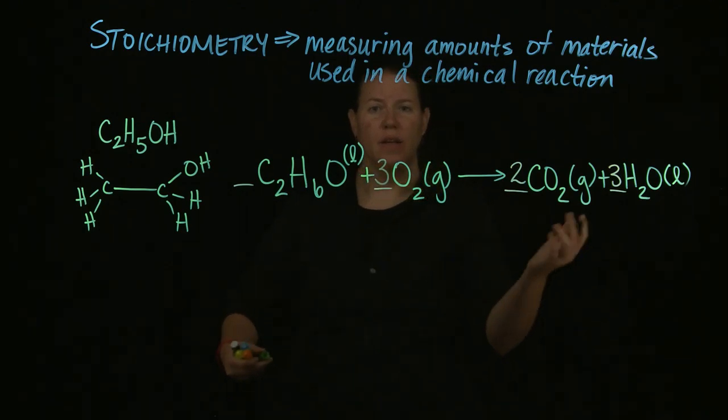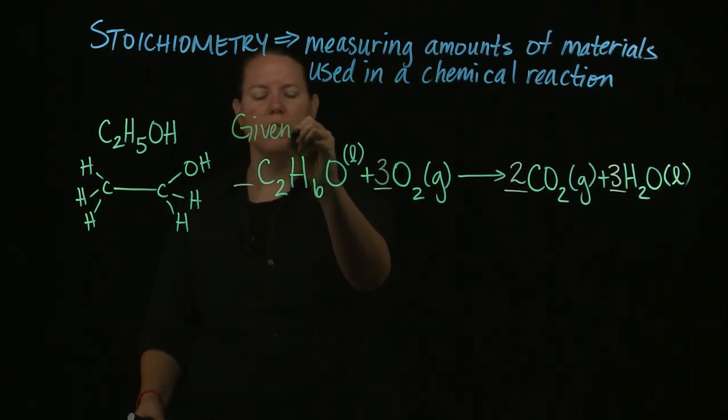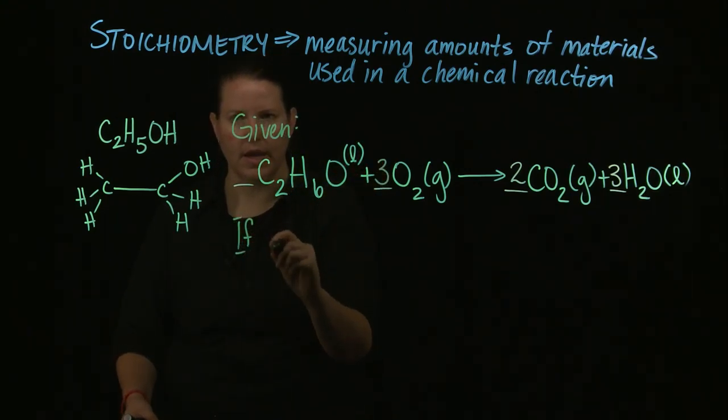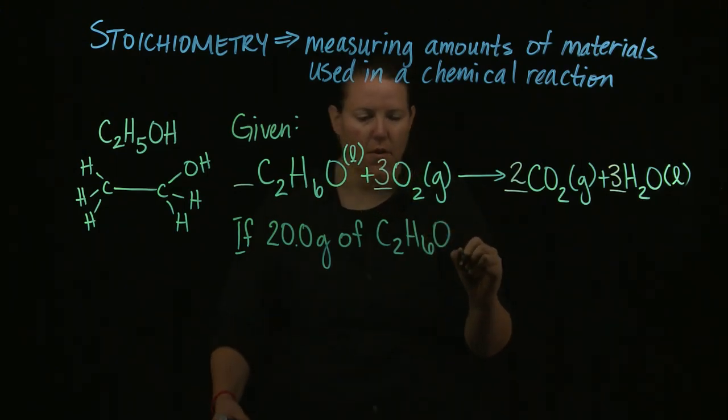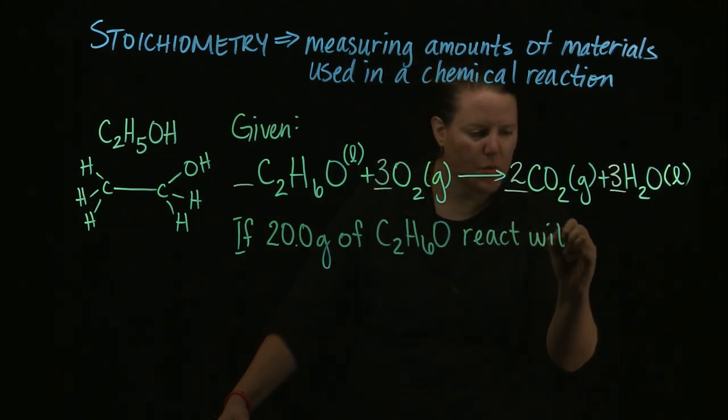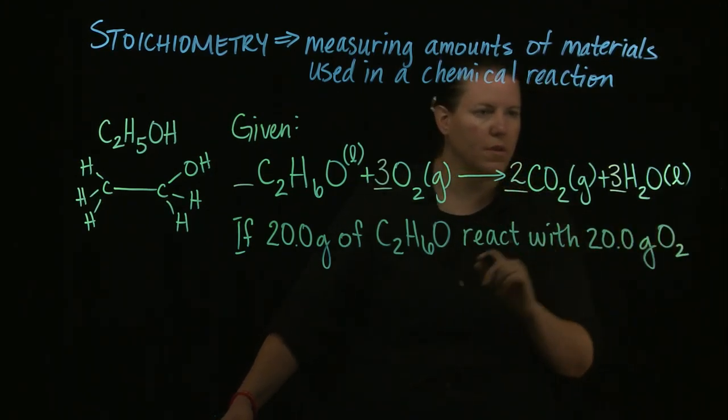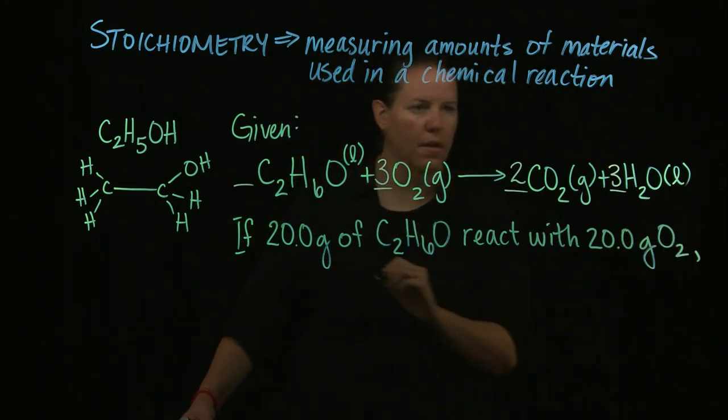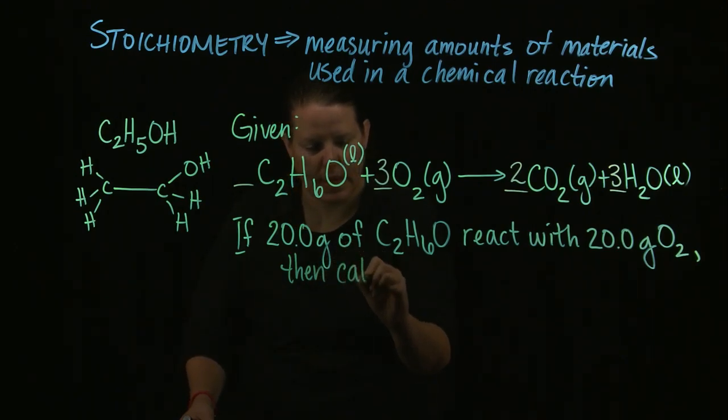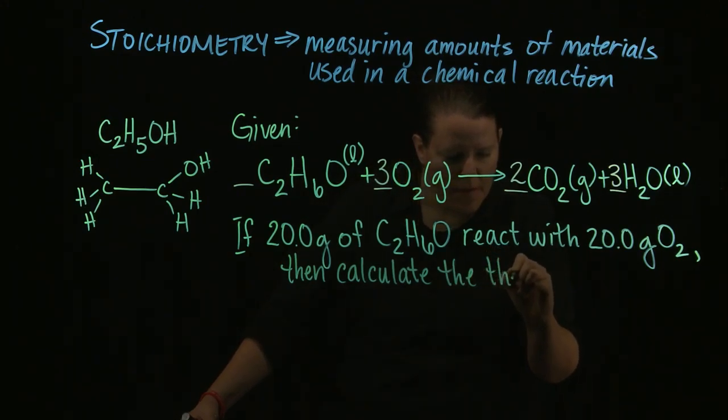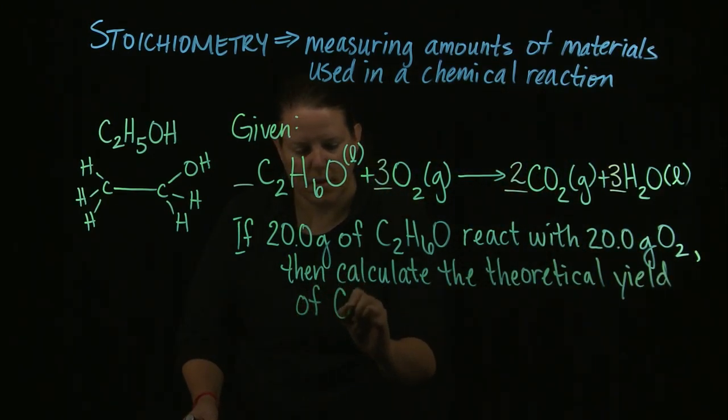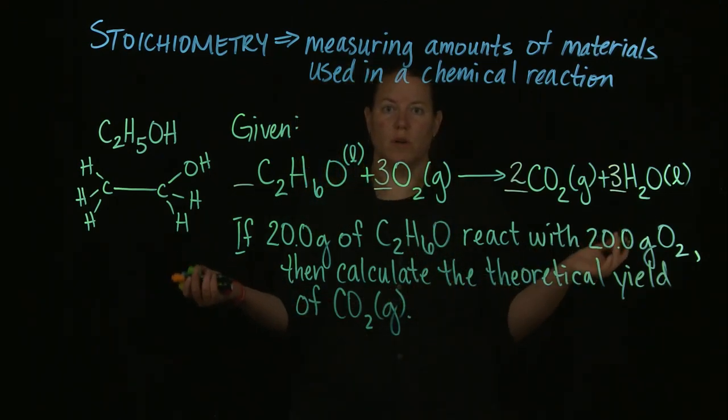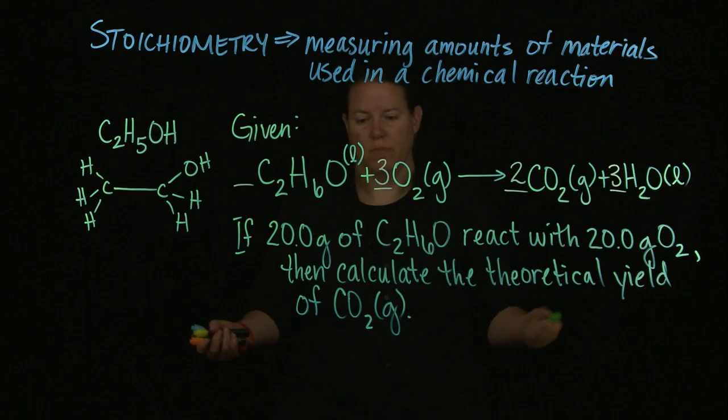Now that we have this, what I could say is, given this reaction, balanced or unbalanced, if, let's say, 20 grams of ethanol react with 20 grams of O2, then calculate the theoretical yield of CO2 gas. Maybe we're worried about our carbon imprint and we would like to know how much CO2 gas we are emitting from this reaction.